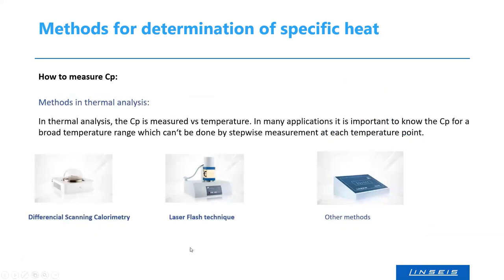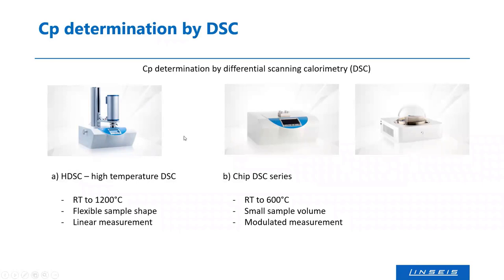In thermal analysis, you are not usually interested in CP at room temperature alone but in how specific heat changes during heating and cooling. Therefore, we must look at thermal analysis methods that allow CP determination over a temperature range — calorimetry, the laser flash technique, and some other methods. I will begin with the DSC, which is the most frequent method used.